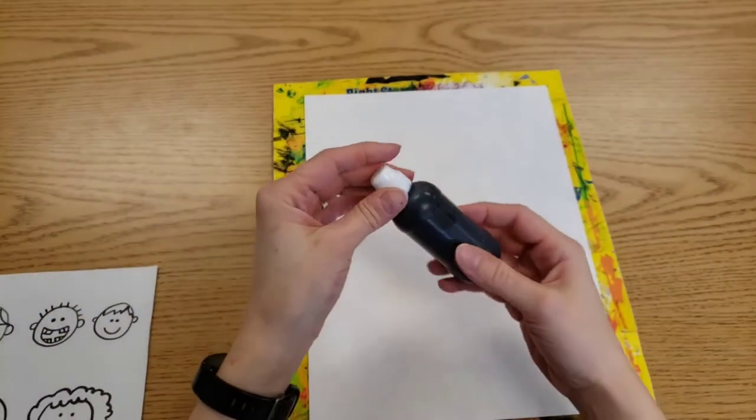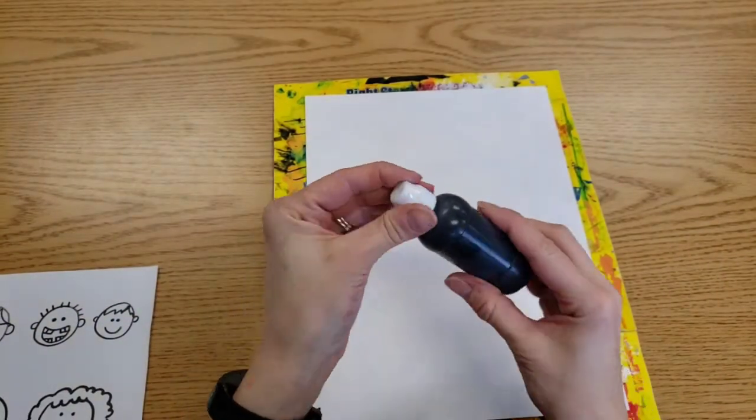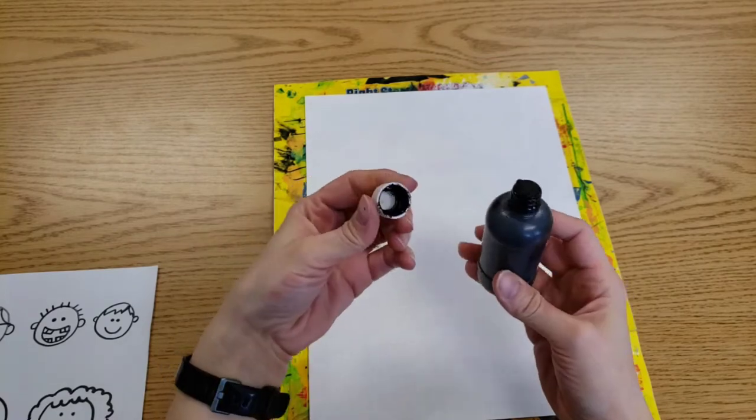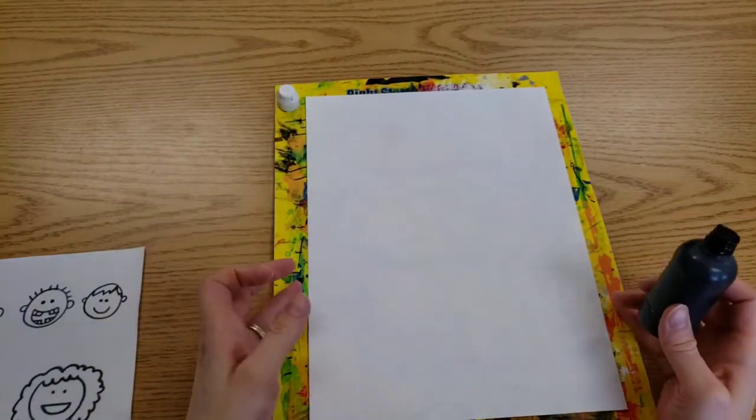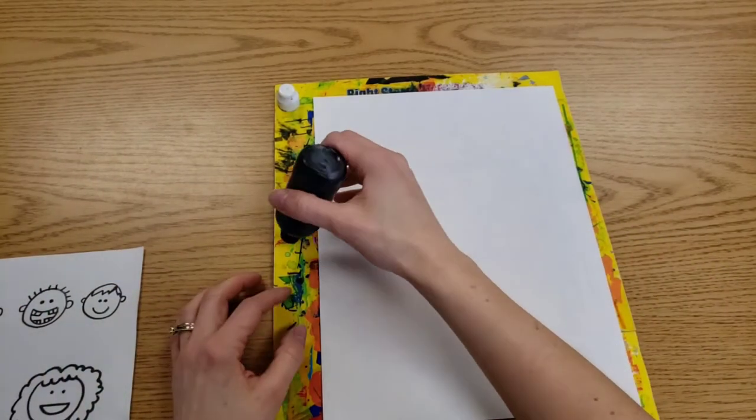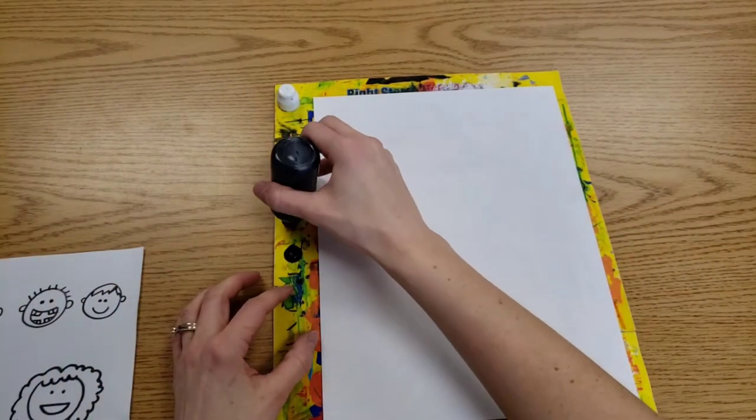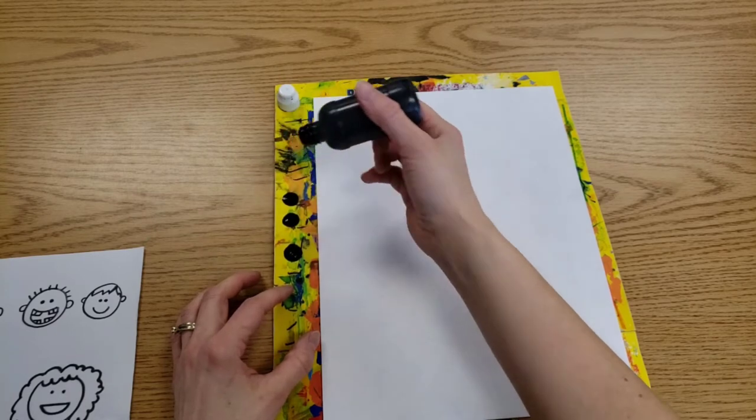We're getting out our bingo daubers for this. To open, we twist the cap. We're going to set it down on your messy mat. And to make sure it is working, you're going to turn it upside down and gently tap the messy mat. Gently is the magic word here.